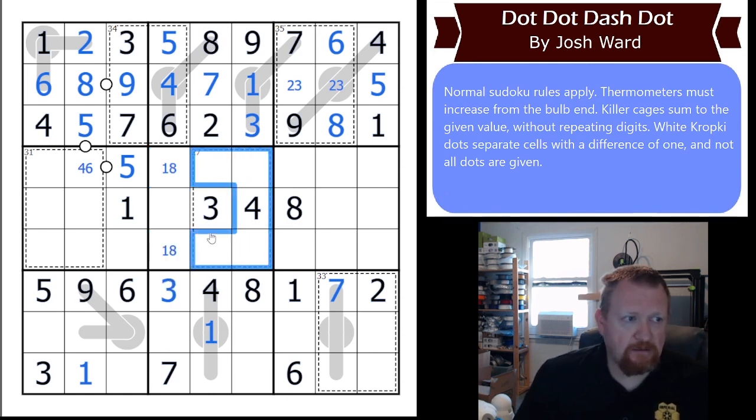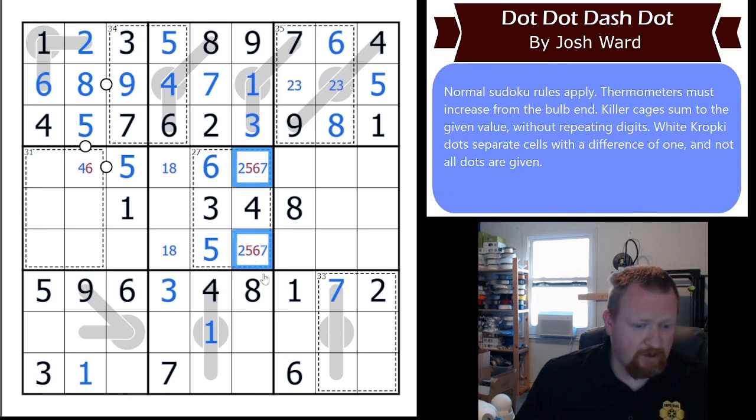Because the 27 cage can't have a 1 or 8 in it, the only possible values are 2, 3, 4, 5, 6, 7. So we go ahead and put those in. 2, 3, 4, 5, 6, 7. This one has to be a 6. This one has to be a 5. And we're left with a 2, 7 pair here.